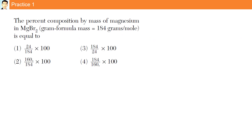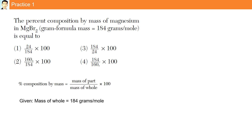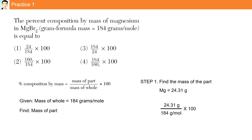The percent composition by mass of magnesium in MgBr, which has a formula mass of 184 grams per mole, is equal to... The answer choice is given in numerical setup. We are given the mass of the whole, 148 grams, and we have to determine the mass of the part. To find the mass of the part, we look at the formula — there is one atom of magnesium with a mass of 24.31 grams. Plugging into the equation, the answer is choice number one: 24 divided by 184, multiplied by 100.